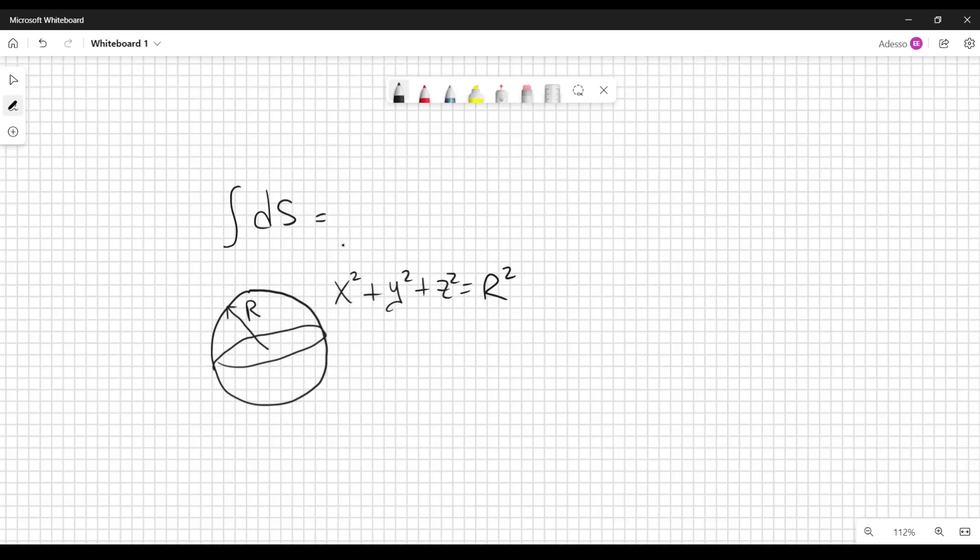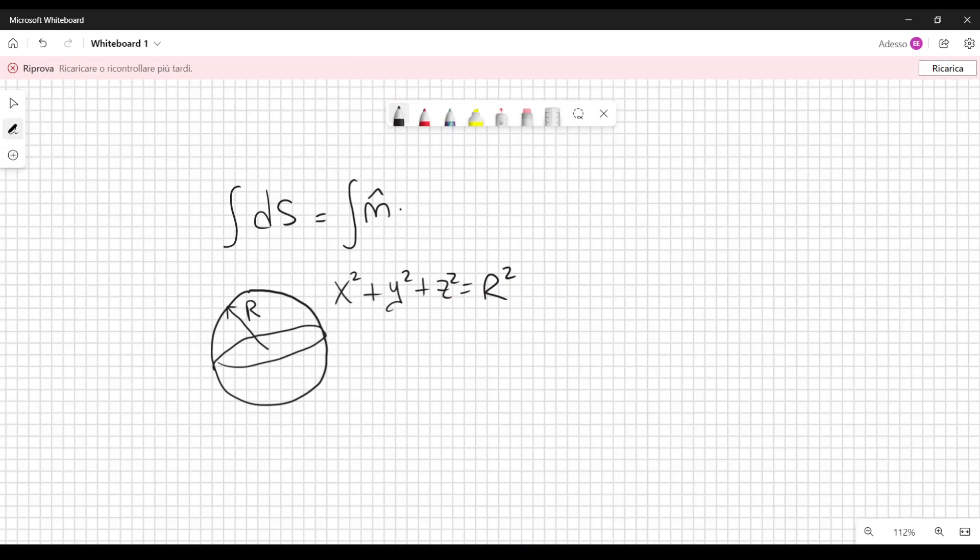And now we are going to use a trick here. So this integral can be written as the unit normal dot product with the unit normal times ds, because the dot product between the unit normal with itself is equal to one. So we have added one inside the expression, and we can do that. We are considering one just written in a different way.